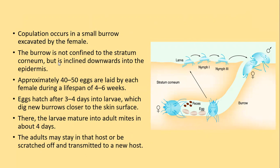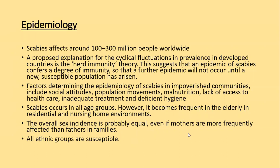After copulation, the adult female enters the burrow and starts laying eggs — approximately 40 to 50 eggs are laid by each female during a lifespan of 4 to 6 weeks. The eggs hatch after 3 to 4 days into larvae, which dig new burrows and mature into adult mites in about 4 days. The adult may stay in the host or may be scratched off and transmitted to a new host. Scabies affects around 100 to 300 million people worldwide.